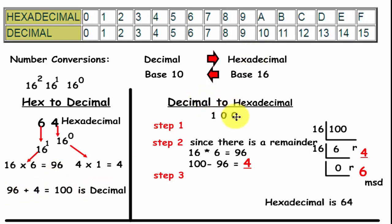Remember the number is 100 because we want to use the same numbers. Now the decimal is 100, step 1. 16, we must divide the number by 16 because we want to convert it to hexadecimal. 16 goes into 100 how many times? 6 times. So leave the 6 here.